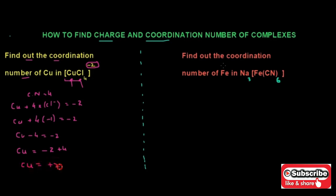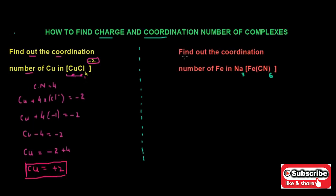The second example is: find out the coordination number of iron in this complex. First we find the coordination number for iron. As you can see from the complex, the iron atom is bonded with six ligands, so the coordination number for iron is six.